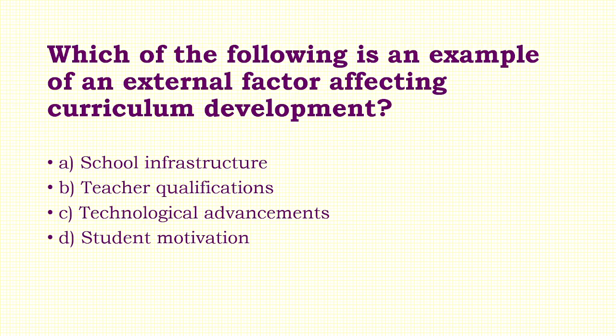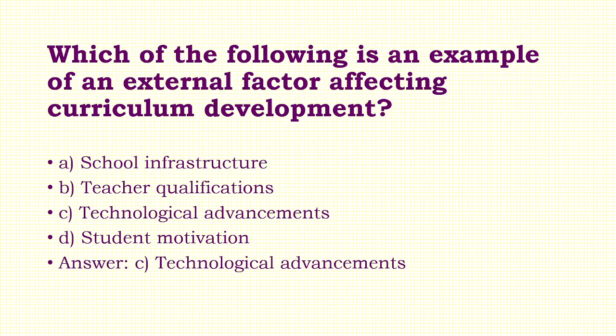Question 5: Which of the following is an example of an external factor affecting curriculum development? Options: A) School Infrastructure, B) Teaching Qualifications, C) Technological Advancements, D) Student Motivation. Answer: Option C — Technological Advancements.